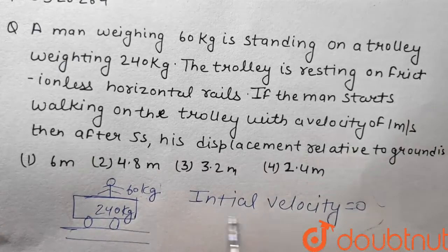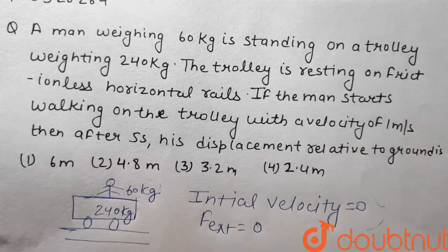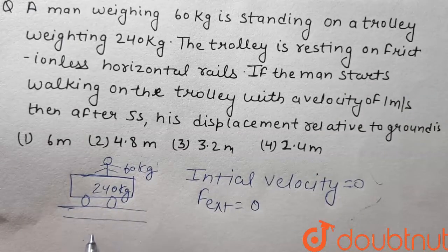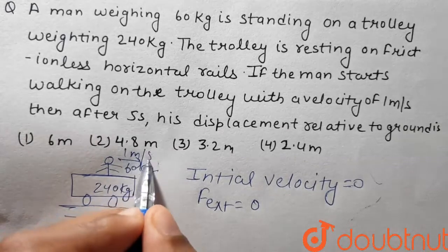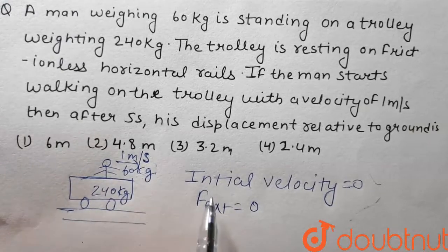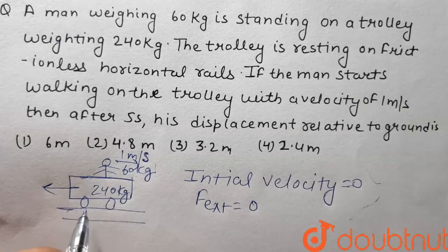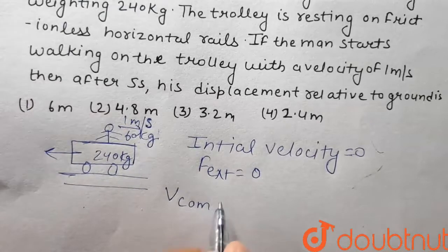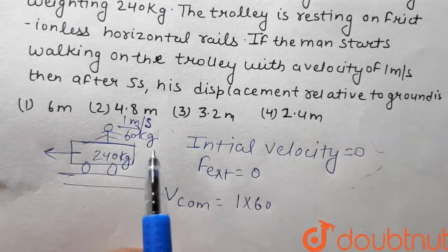Since the initial velocity is 0 and external force is 0, the center of mass velocity remains 0. The man walks at 1 meter per second relative to the trolley.